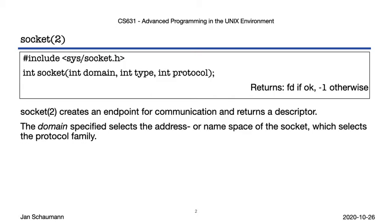There are several different domains defined. One important feature of the Sockets API is that it allows you to implement inter-process communications logic that is largely identical for processes communicating on the same system as for those communicating across the network. In either case, you'd start by creating a socket using the system call.